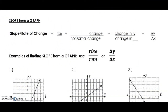In this video we are going to be learning how to find the slope of a line from a graph. Slope is also known as the rate of change — it's the steepness of a line. Slope is denoted by the letter m, so you're going to see us use the letter m in a lot of our examples. Slope or rate of change is a ratio of the rise, which is the movement up and down between two points on a line, and the run, which is the movement left and right.